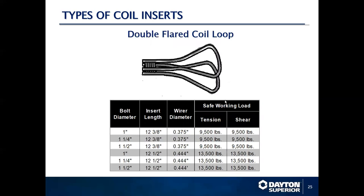The double flare coil loop insert consists of two individual loops loaded to a coil insert. You are going to get about 13,500 pounds safe working load in tension with this product, and it also provides a very good shear capacity.